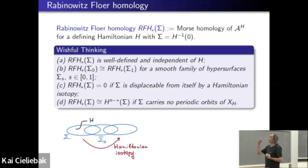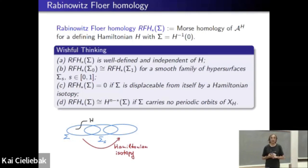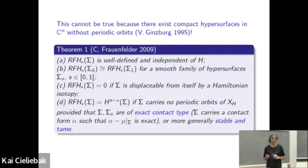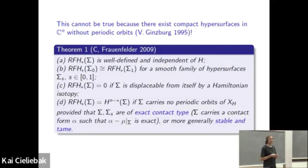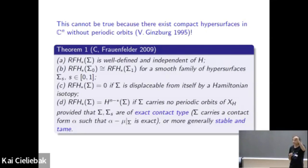At that point, we got slightly worried, because in 1995 Victor Ginzburg proved that there exist compact hypersurfaces in C^N which carry no periodic orbits. So something must have been wrong. We were puzzled for a while, and the solution turned out to be precisely that we have this additional Lagrange multiplier varying in R, and R is non-compact. It is possible that in doing the argument — for example, proving that the boundary operator squares to zero — you need some compactness, and this can fail because the Lagrange multiplier escapes to plus or minus infinity. That was a new phenomenon not present in Floer's original theory.